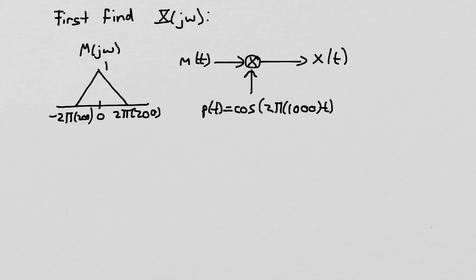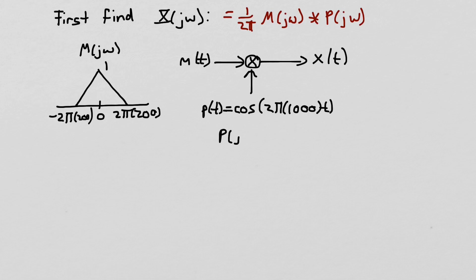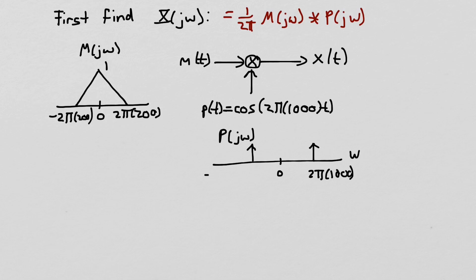The key to this solution is remembering that x of j omega is equal to 1 over 2π times the convolution of m of j omega with p of j omega — that's from our multiplication property. When we multiply in the time domain, we convolve the frequency responses, with a 1 over 2π scaling factor. So we need the Fourier transform of p of t, the cosine, which gives two impulses located at plus and minus the frequency of the sinusoid — plus and minus 2π times 1000 — each with area pi.